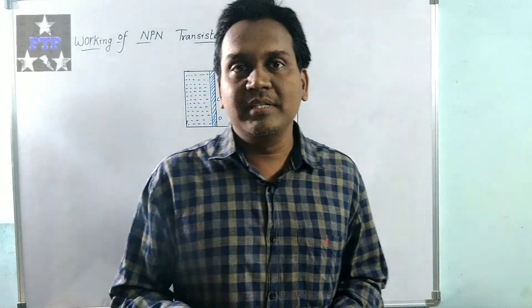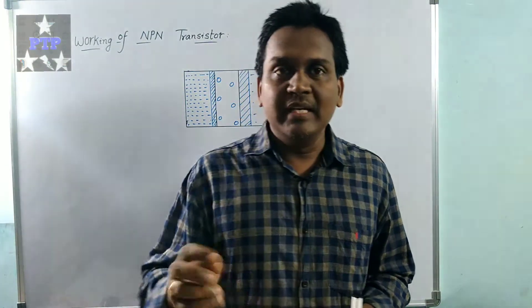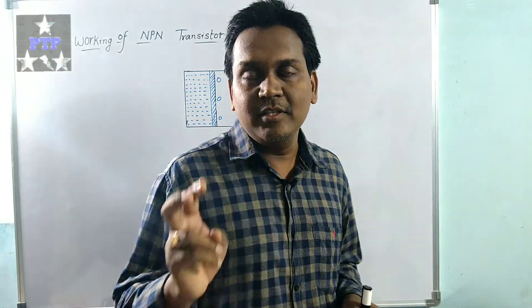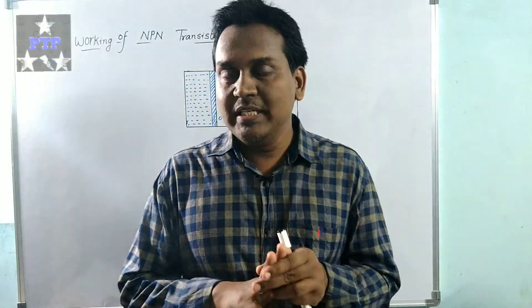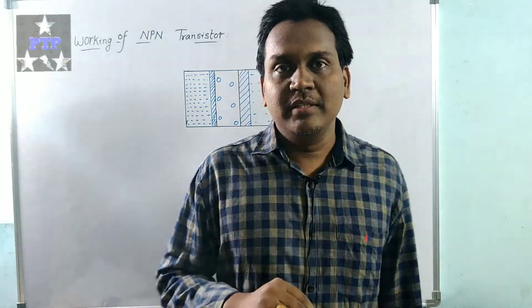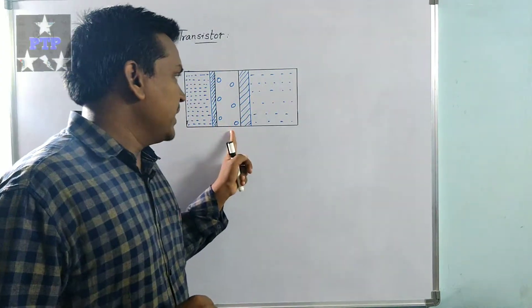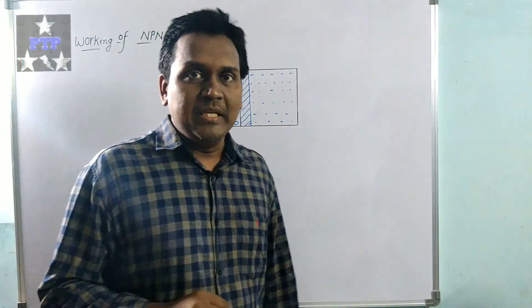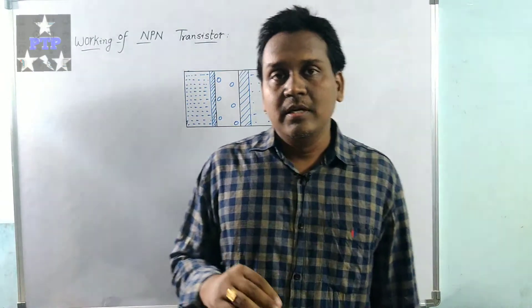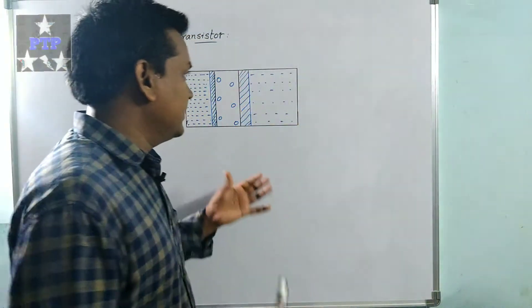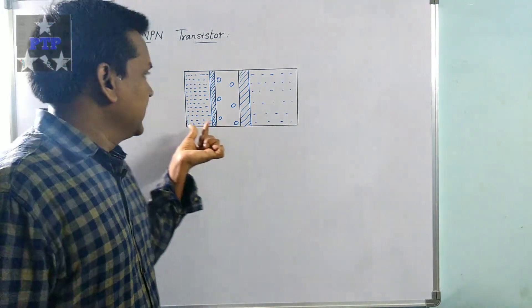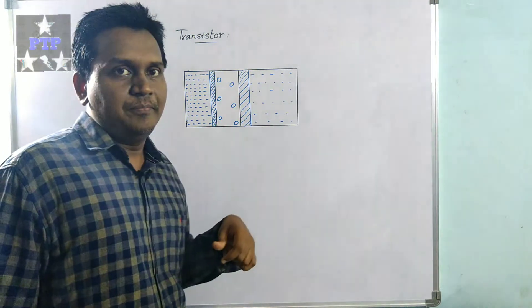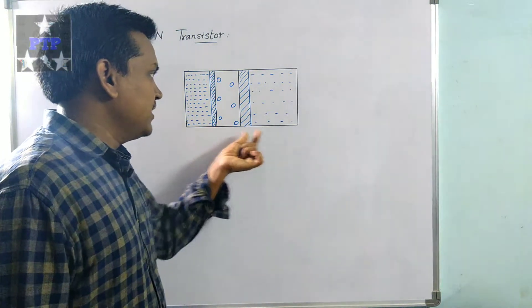We have also discussed the construction of the transistor. The construction can be categorized in two ways: based on size and based on doping. Coming to size, the transistor consists of three terminals: emitter, base, and collector. Considering the sizes of these three sections, the collector is big in size, the base is very small in size, and the emitter is moderate in size — bigger than the base and smaller than the collector.